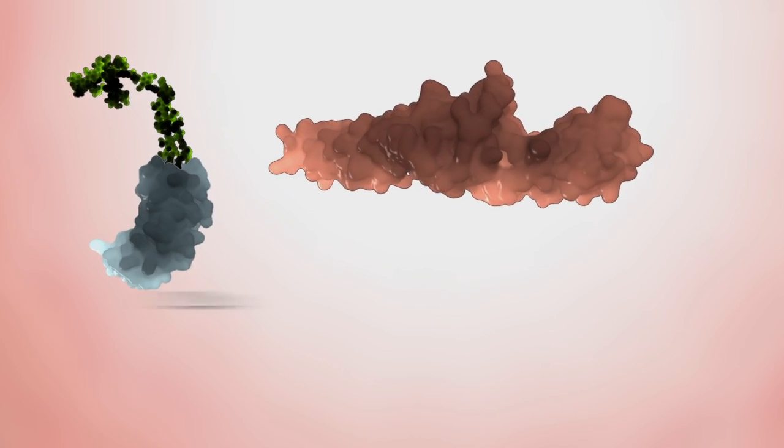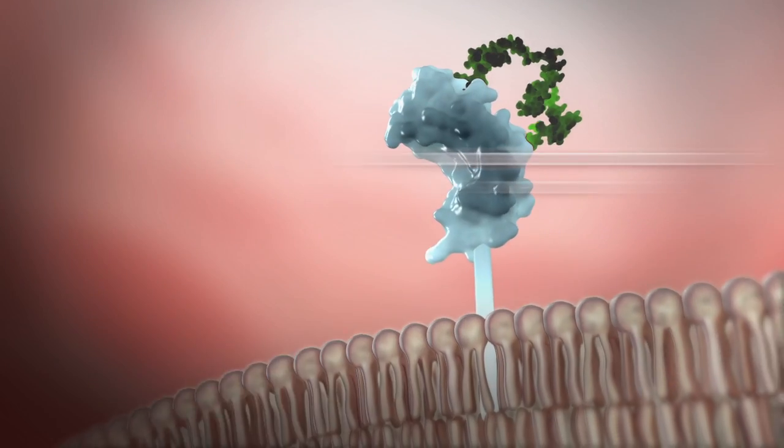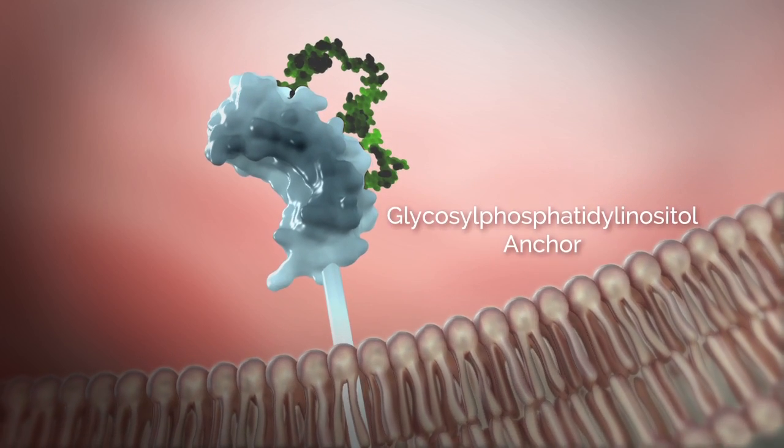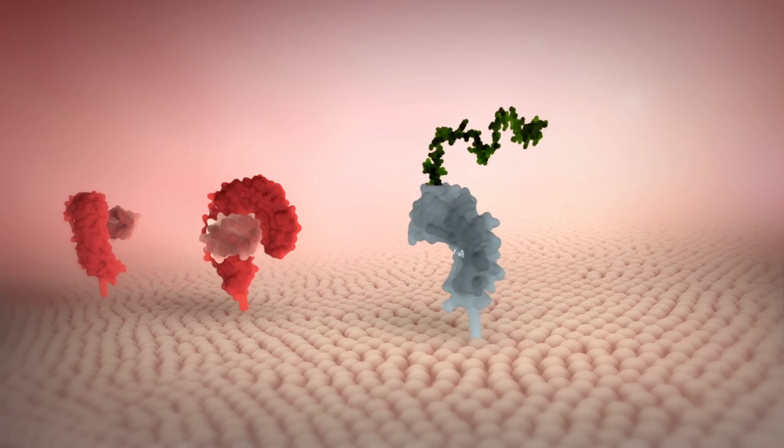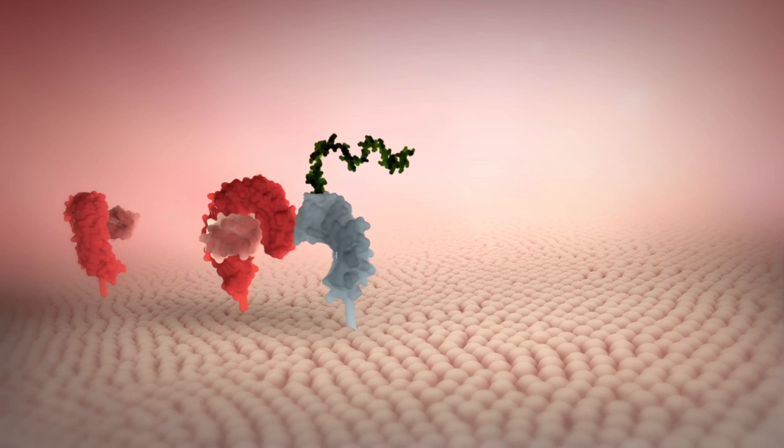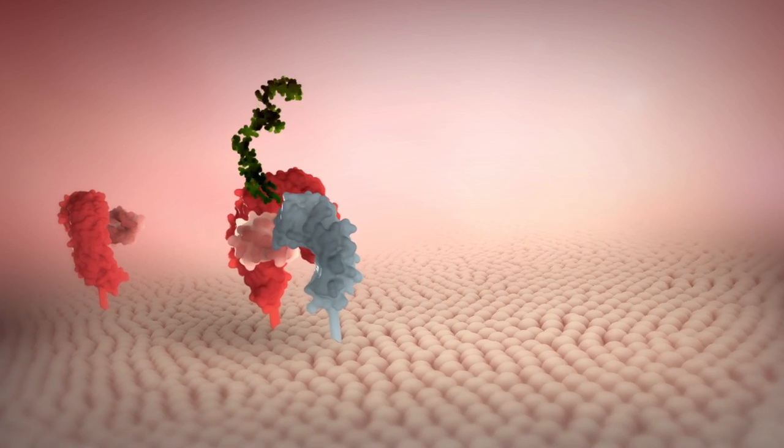CD14 can be soluble, or bound to the cells peripherally through a glycosyl phosphatidyl inositol anchor. CD14 delivers and loads LPS to the ectodomain of TLR4.